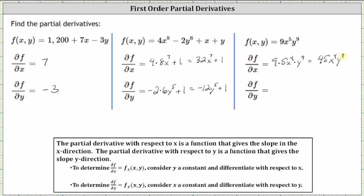To find the partial of f with respect to y, we treat x as a constant and differentiate with respect to y. The derivative of 9x⁵y⁹ with respect to y is 9x⁵ times 9y⁸, which gives us 81x⁵y⁸ for the partial of f with respect to y. I hope you found this helpful.